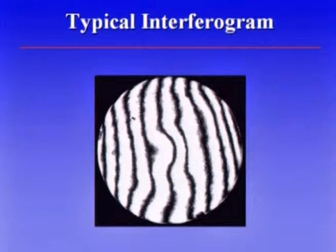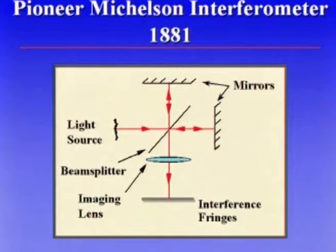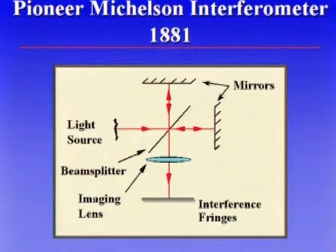Nowadays this is all analyzed by a computer, but for a long time it was analyzed just by a person looking at it, maybe using a ruler. In 1881, Michelson came along — and Michelson knew everything there was to know about interferometry, a real genius. He invented the interferometer named after him, used it in some of his experiments, and later won the Nobel Prize for that work. Light source, a couple of mirrors, and the two beams come down, interfere, and you see interference fringes.